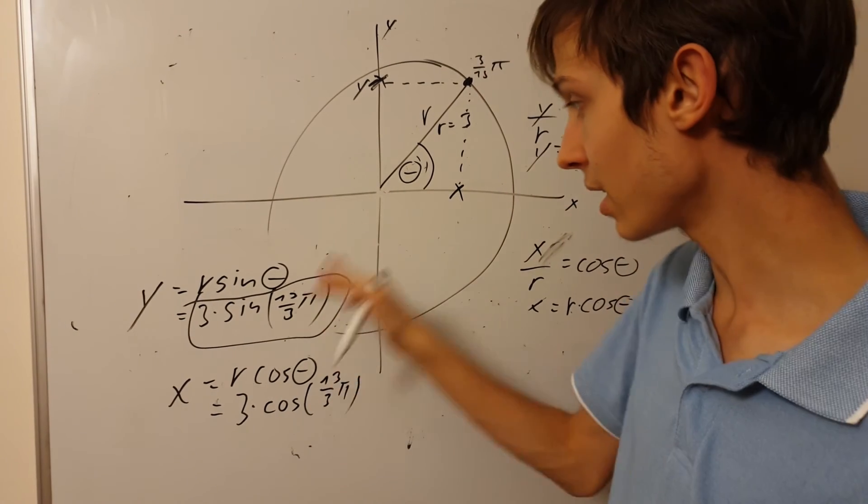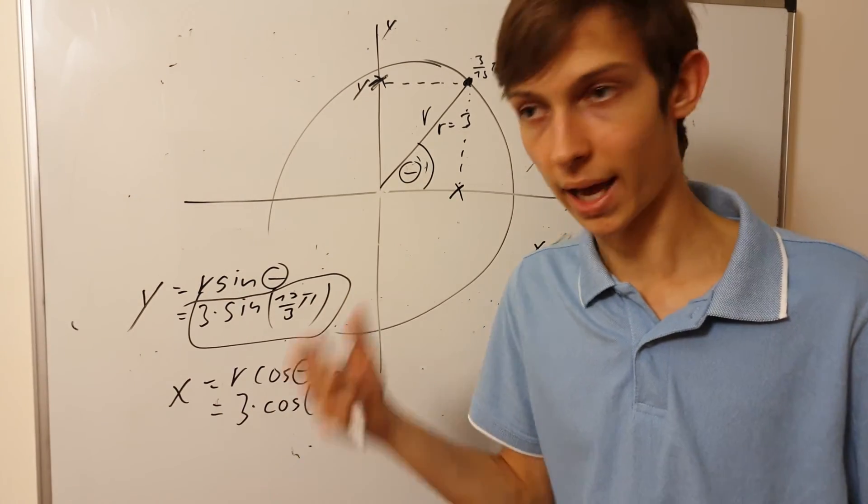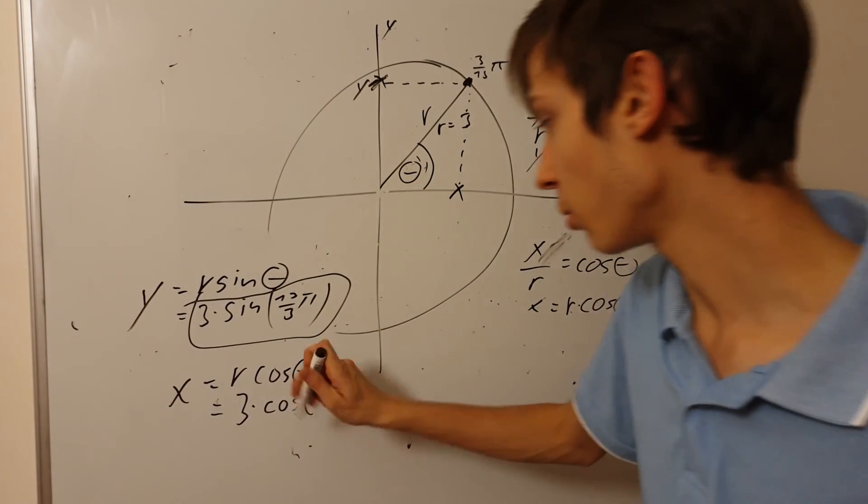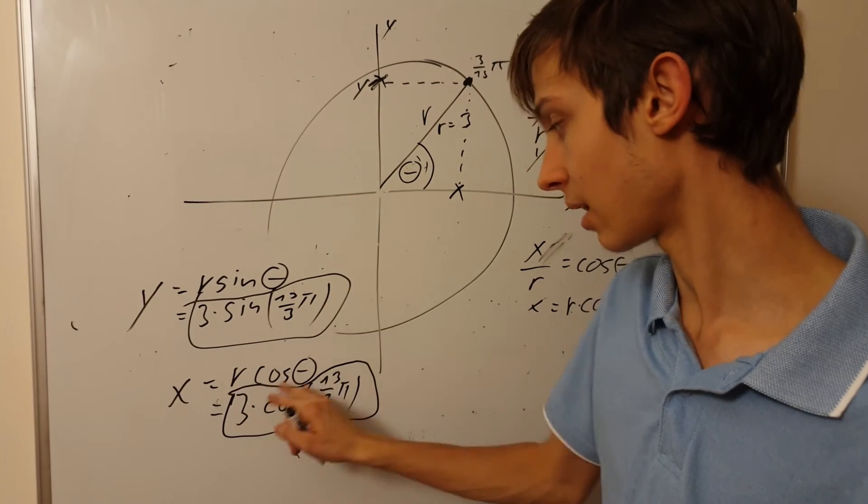Of course, 13 over 3 pi radians. 13 over 3 pi radians. It's not easy to do by hand. So use your calculator and you will figure out. Just input this entire thing into your calculator and it will give you an exact number.